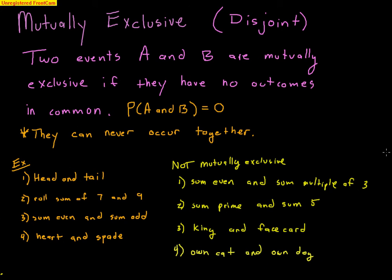Let's talk about a pretty important vocabulary word for the rest of the unit: mutually exclusive. Another way of saying mutually exclusive is disjoint, though we prefer mutually exclusive. Two events A and B are mutually exclusive if they have no outcomes in common — meaning the probability of A and B occurring at the same time is zero. They can never occur together.